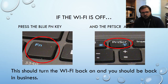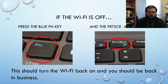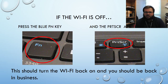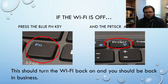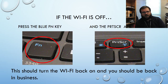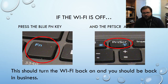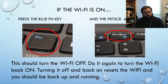If the Wi-Fi is off, we're going to turn it back on by pressing the blue Function key — the FN key in the bottom-left corner of your keyboard — and the Print Screen button in the upper-right corner, at the same time. That will turn the Wi-Fi back on, and the indicator light on the right-hand side should light up again.